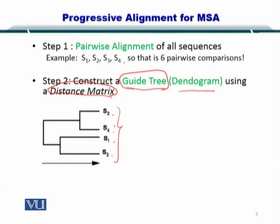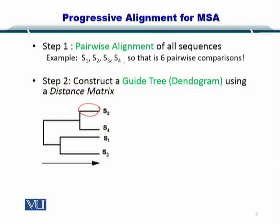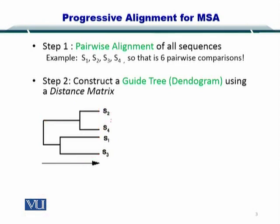To understand what this tree represents, you need to consider the length of these branches. You can see that this branch and this branch are equal in length, while this branch has a very long length. Also, these two branches are longer than these, and the branch is smaller for these two. Essentially, it means that S4 and S2 are similar, while S1 and S3 are similar to each other.